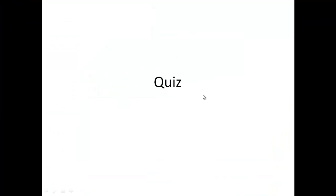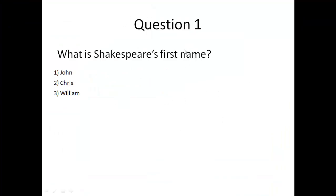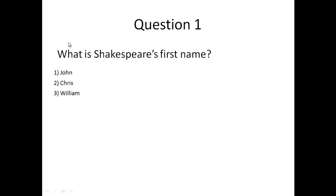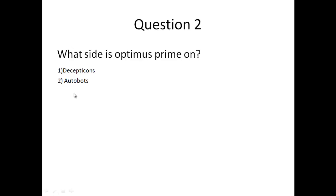So let's play through. You have quiz, and then it will be question one: 'What is Shakespeare's first name?' Say if I don't know, I will go on to type any of the ones that's not William, and it says 'Incorrect, please try again.' Then what you can do is go back to question one.